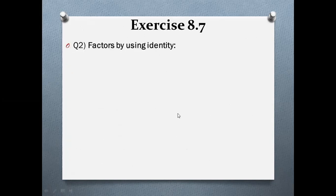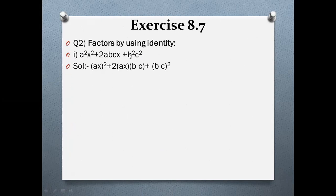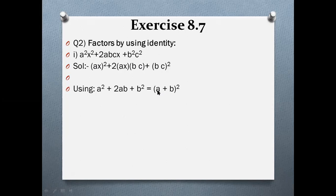Now question 2: factorize by using identity. The first part has three terms. The first term is a perfect square of ax, and the last term is a perfect square of bc. Check the middle term: 2 × ax × bc gives the middle term. Using a² + 2ab + b² = (a + b)², with a = ax and b = bc, the answer is (ax + bc)².